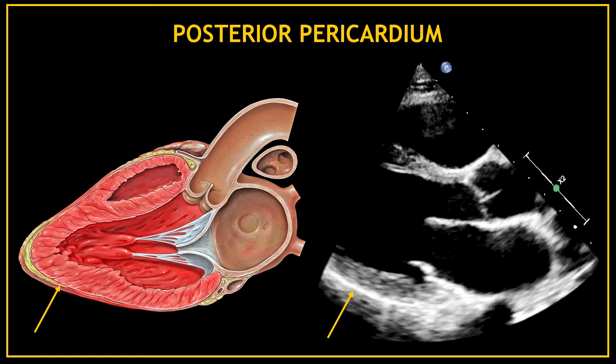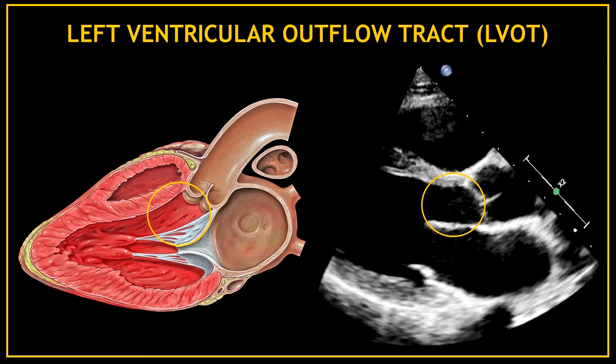After the posterior wall we can visualize a very thin bright white line. That line corresponds to the posterior pericardium. This smaller area in the left ventricle is called the left ventricular outflow tract, or the LVOT.